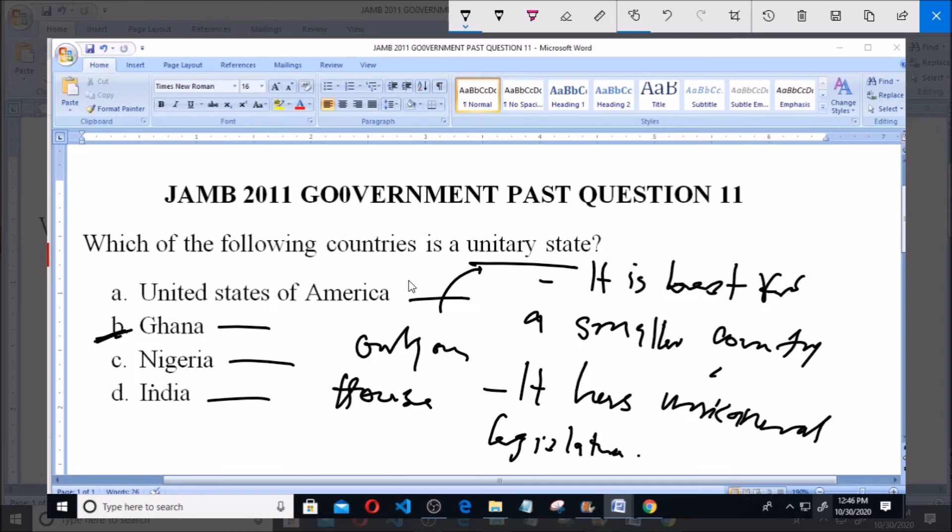America is not a unitary state, Nigeria is not a unitary state, India is not a unitary state, but Ghana is. So option B is correct. Thank you and God bless you. Kindly subscribe for more of our videos.